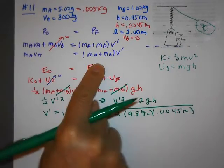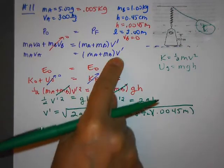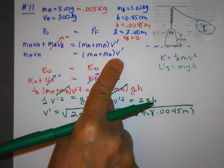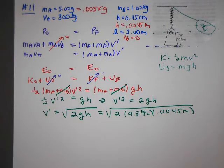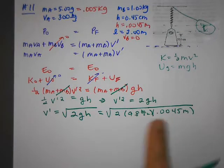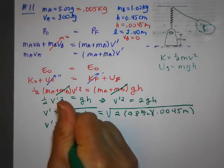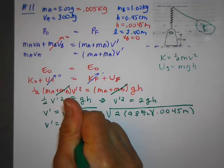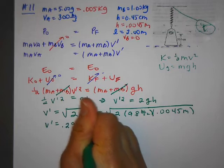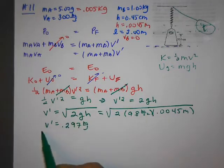And again, I couldn't do my conservation of energy because why? I didn't know V prime, okay? So when you're not sure how to do a problem, you go to the end and then you just kind of work backwards. So then when I put all this on my calculator, I get V prime is 0.297 meters per second.